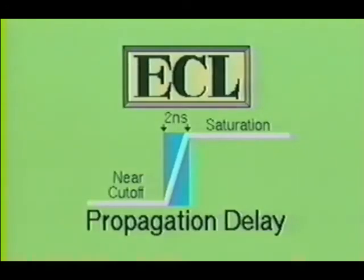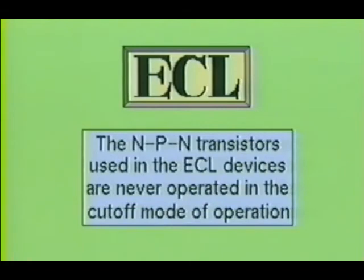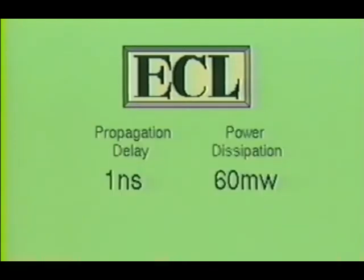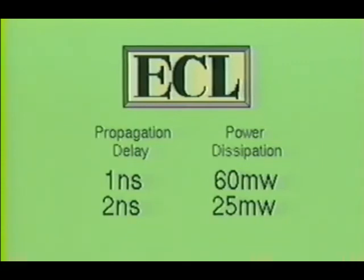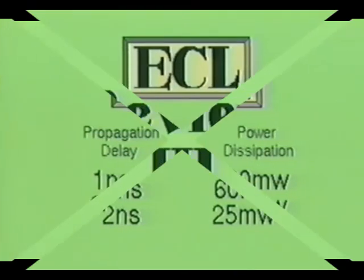The emitter-coupled logic family is among the fastest of the digital logic families in use today, and is widely used in industry where cost is not the primary factor. ECL devices are commonly found in high-speed computing systems. ECL circuits are designed so that the collector-to-emitter voltages are always above 0.3 volts, keeping transistors in an active mode and avoiding hard saturation when turned on. The fastest ECL series has a propagation delay of only 1 nanosecond with a power dissipation of 60 milliwatts per gate. Another ECL series offers a propagation delay of 2 nanoseconds with only 25 milliwatts per gate — notice the trade-off between speed and power: the faster the gate, the higher the power consumed.